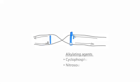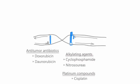Alkylating agents, platinum compounds, and antitumor antibiotics cause damage to DNA in this way. Please watch other videos for more detailed explanations.